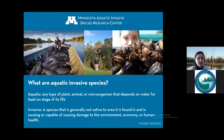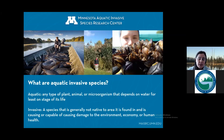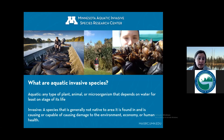I wanted to start with a basic understanding of AIS to make sure we're all on the same page about why we should be concerned. An aquatic species is any type of organism — plant, animal, or pathogen — that depends on water for at least one stage of its life. An invasive species has spread or been introduced beyond its native range and is either causing harm or has the potential to cause harm. Invasive species cause tremendous harm to our environment, our economy, and human health.